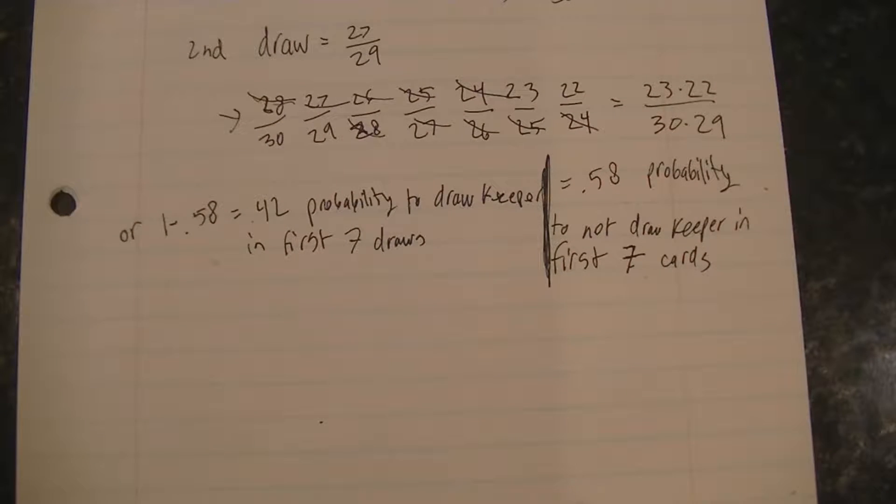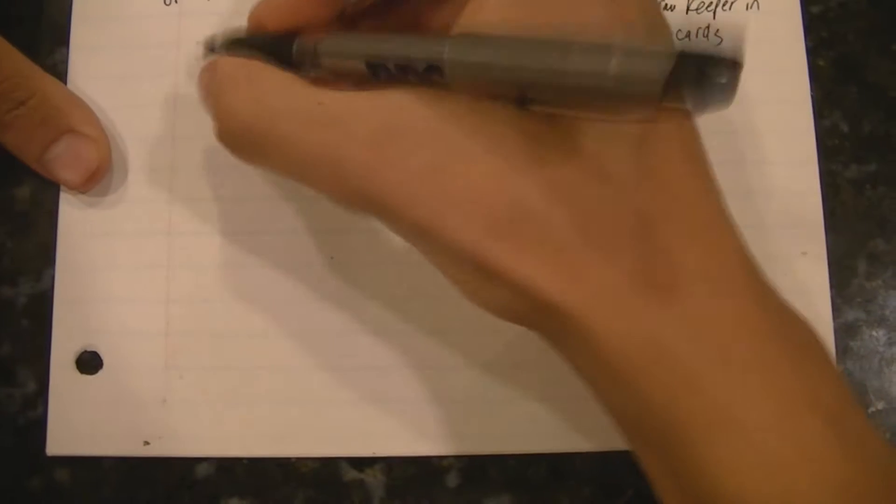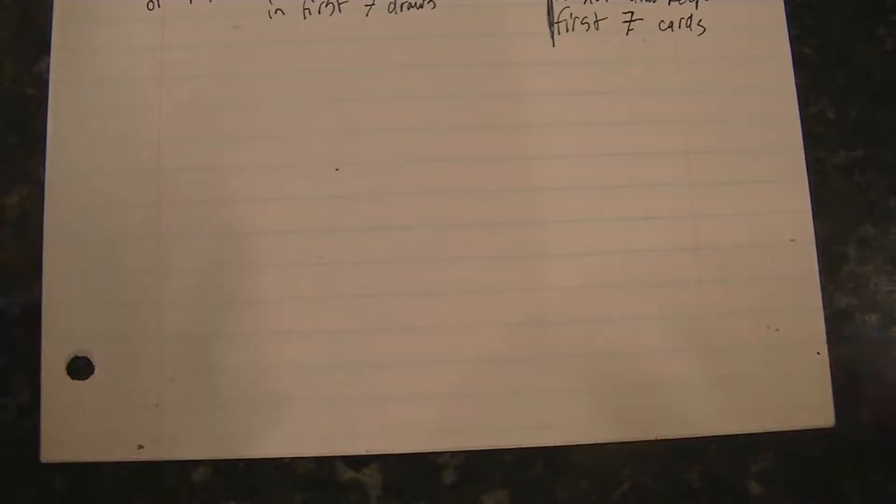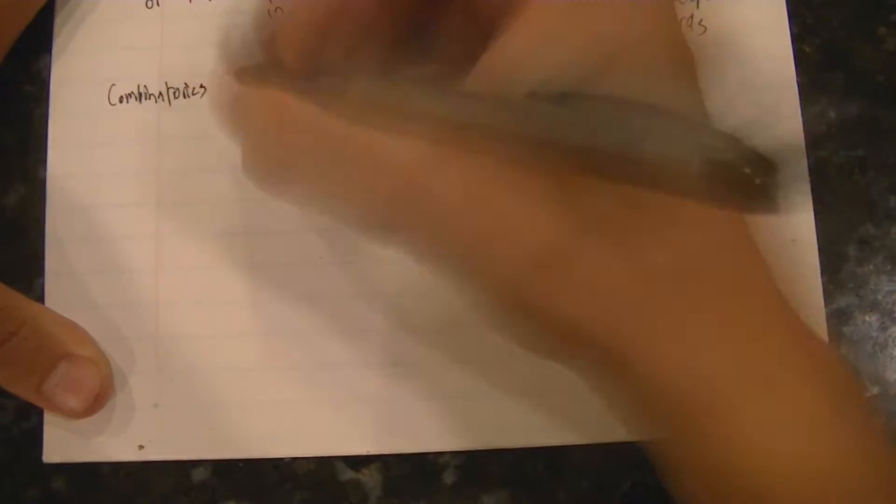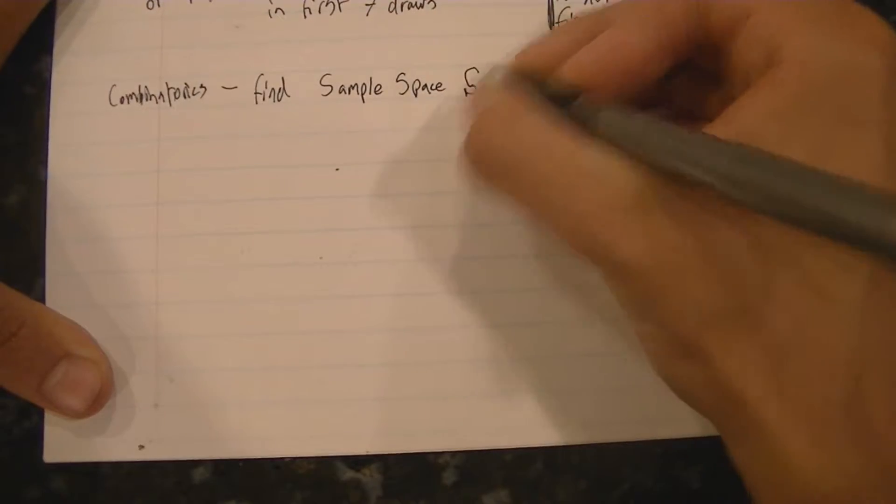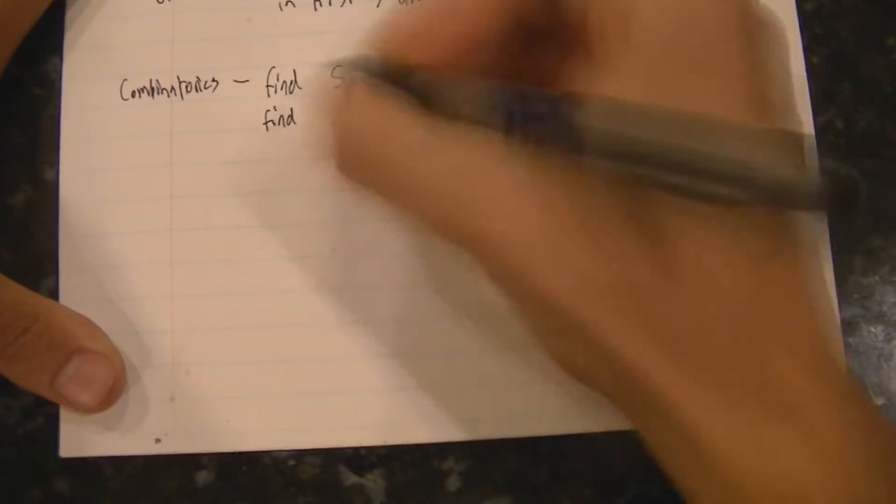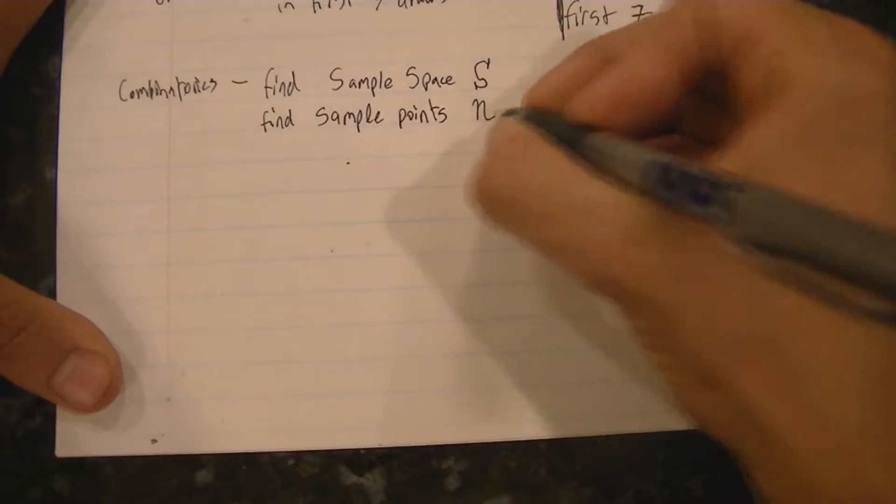In the last problem we found that after seven draws you have a 0.42 probability to have drawn a keeper. We did that by finding the probability of not drawing a keeper for each of your seven draws. Now we're going to look at a more efficient way of solving these types of problems by using combinatorics and the sample space method.